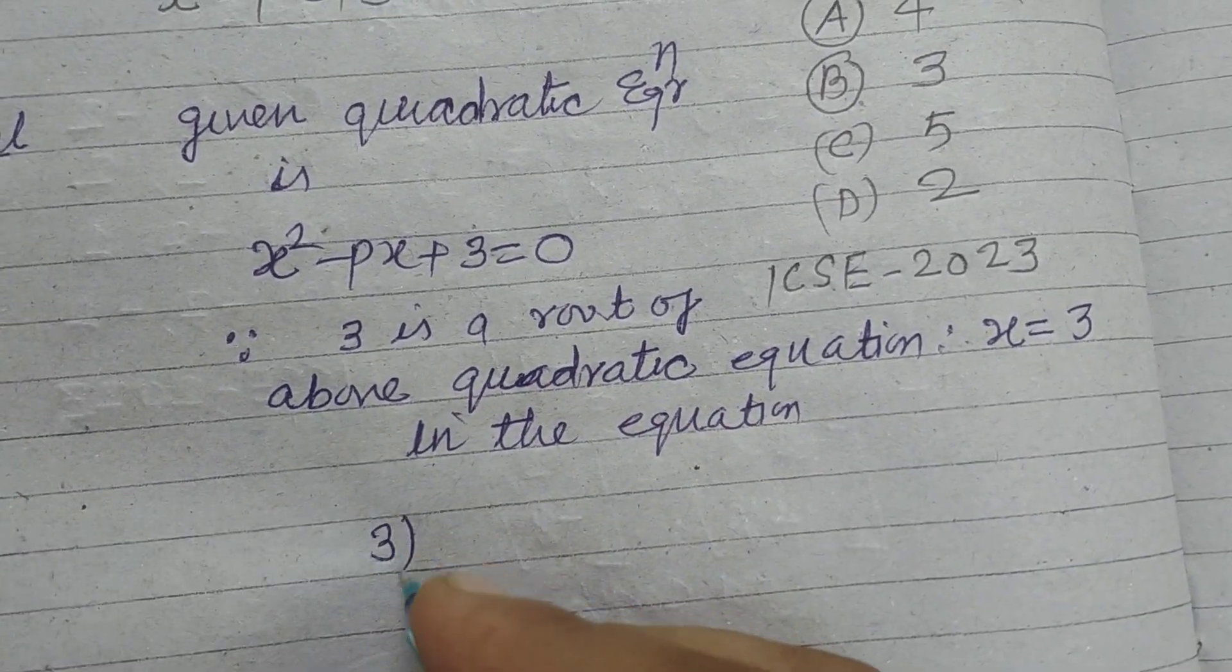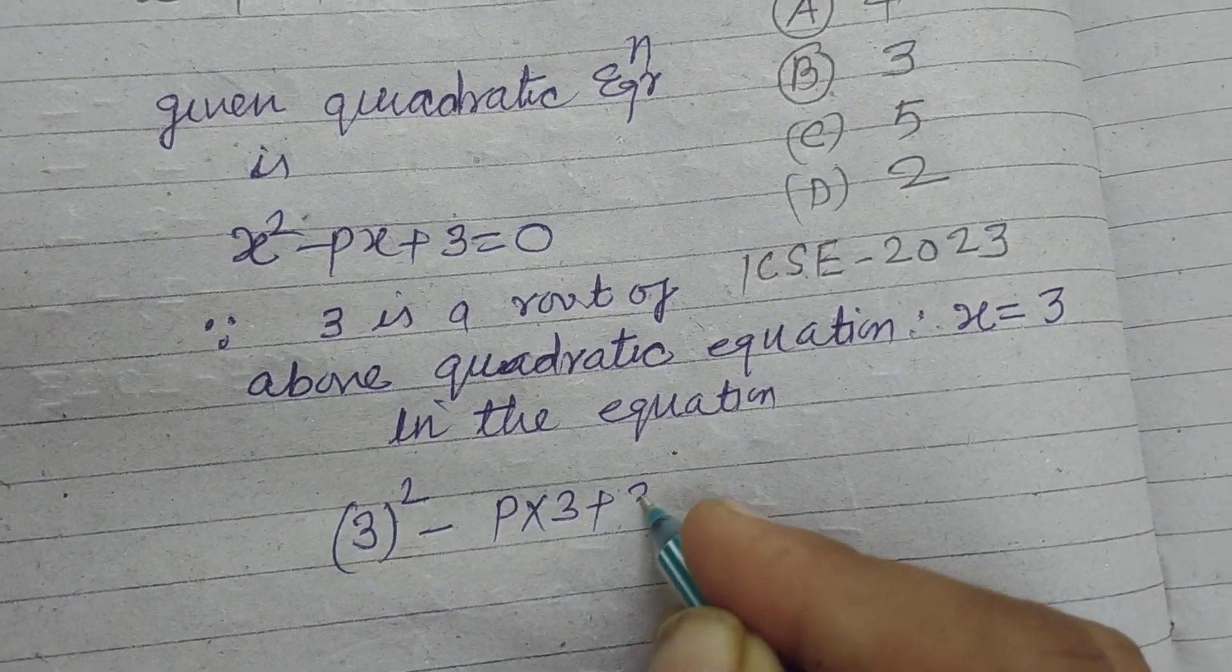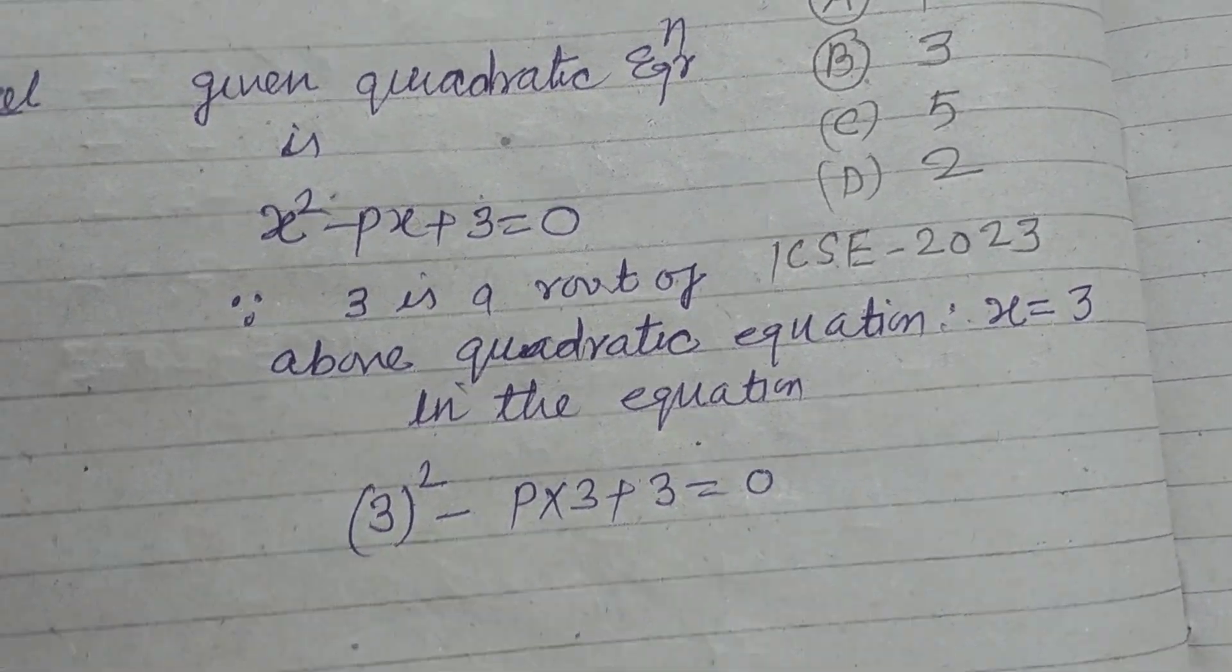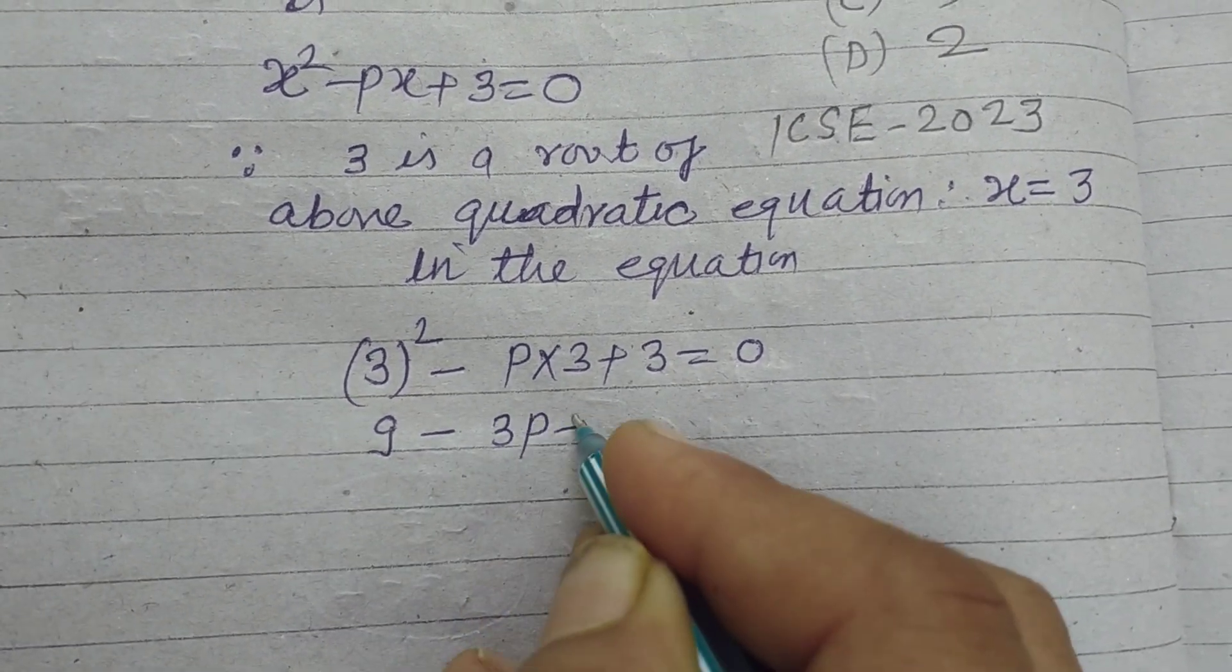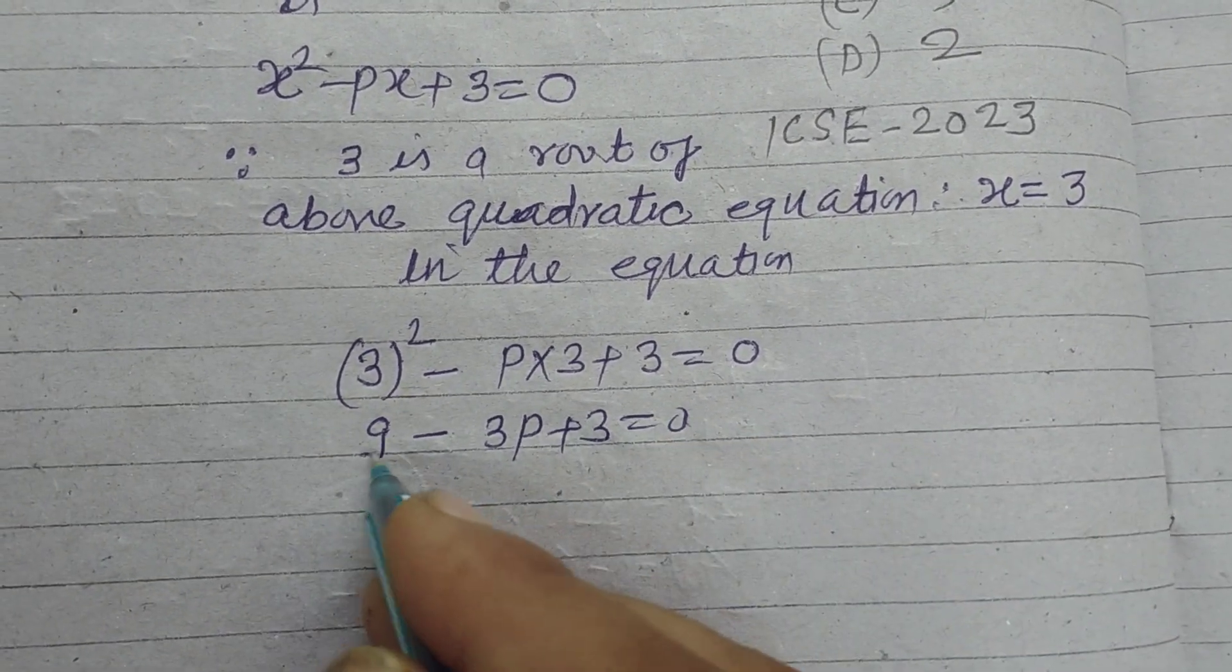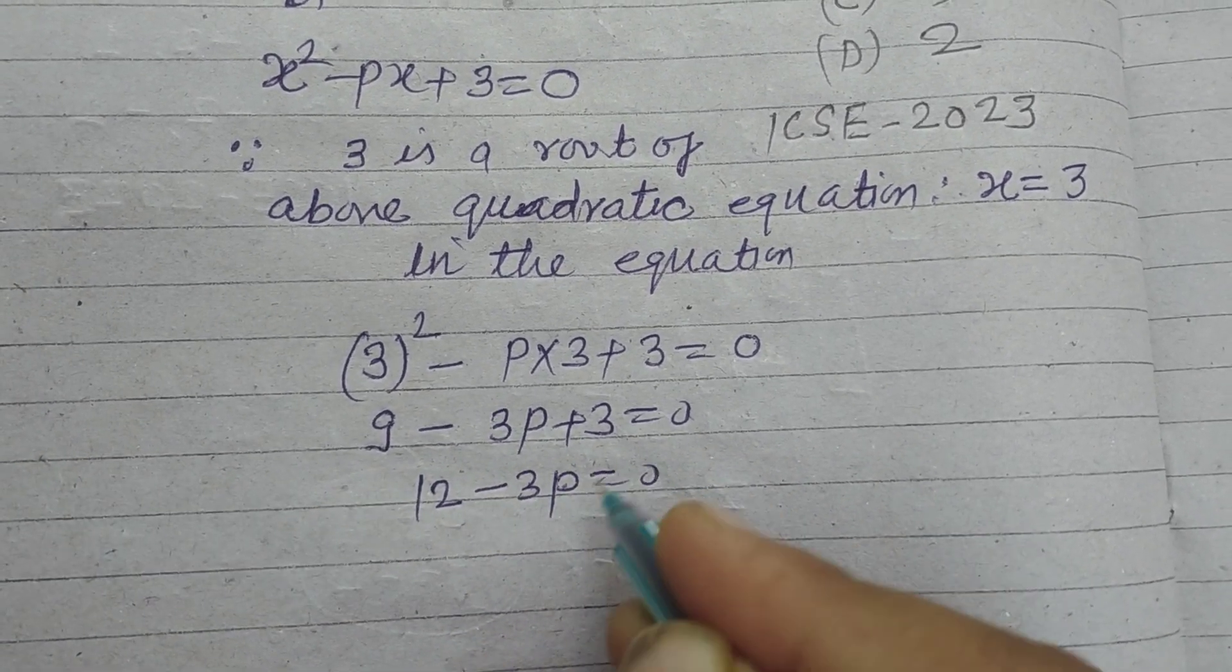so 3 whole squared minus p into 3 plus 3 equal to 0. It is 9 minus 3p plus 3 equal to 0. 9 plus 3 is 12 minus 3p equal to 0.